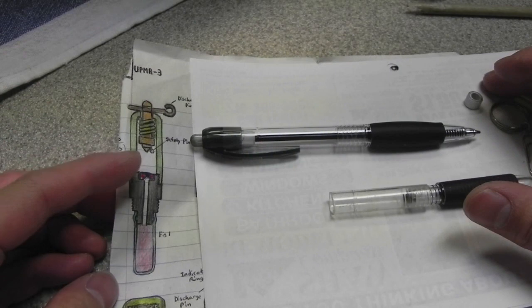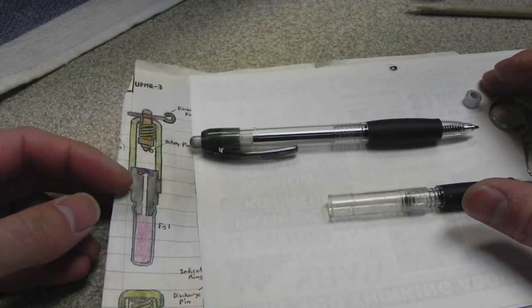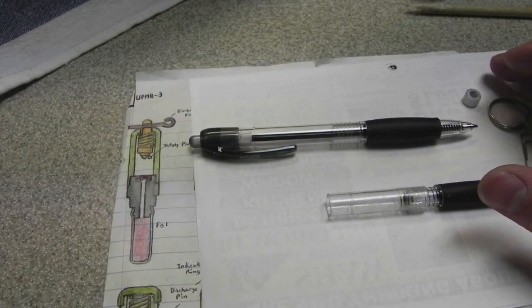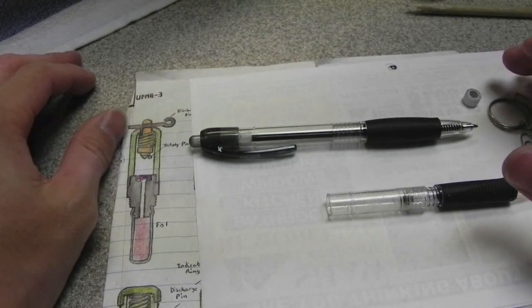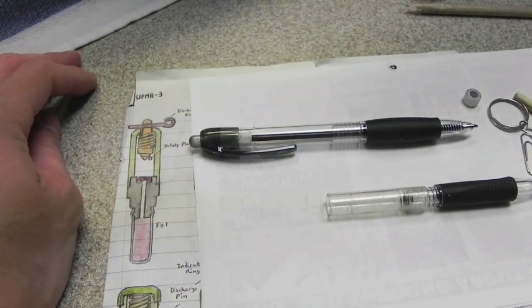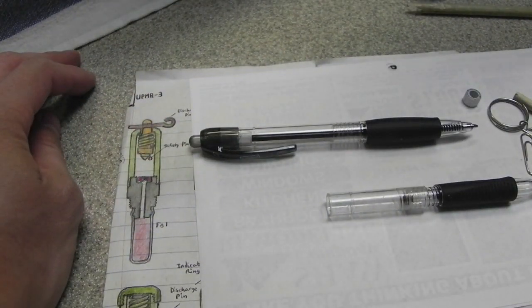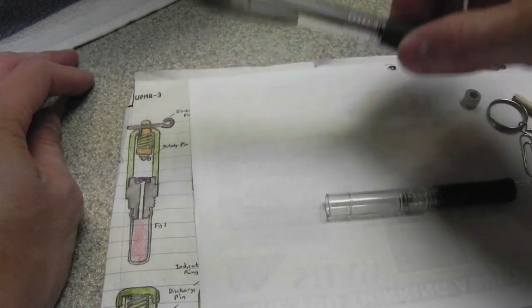I'm just going to try to make something like this UPMR3 type deal fuse. And this is generally used for trip wires, but you can still use it for simple smoke grenades, etc.